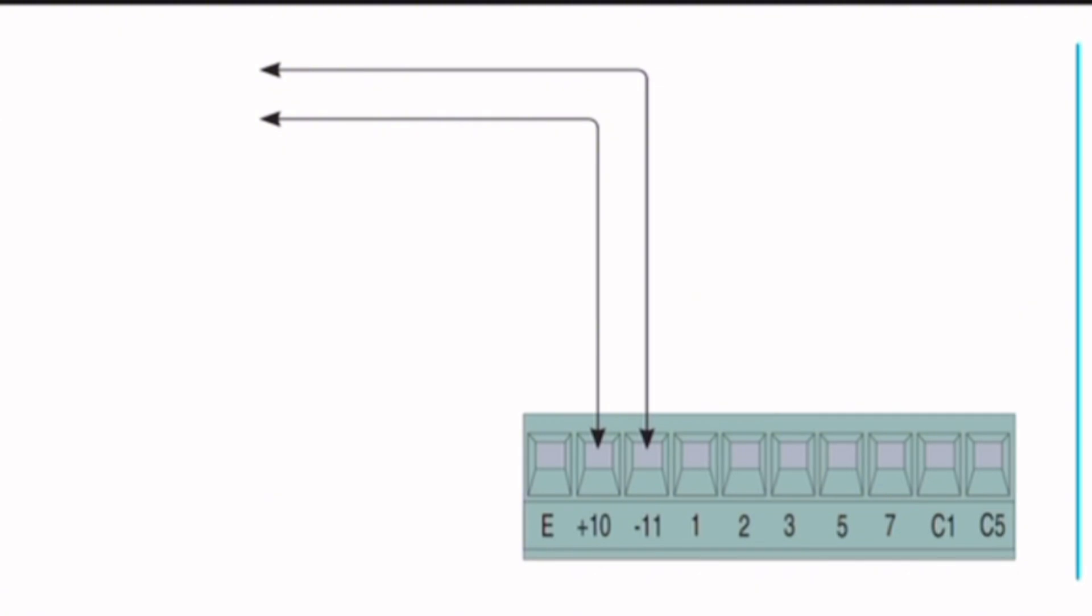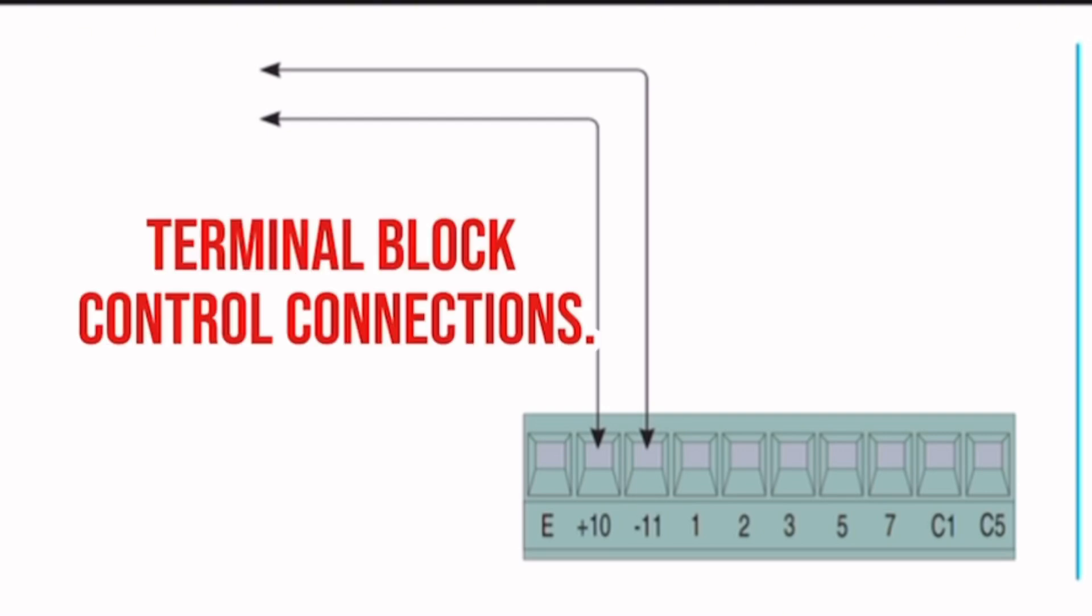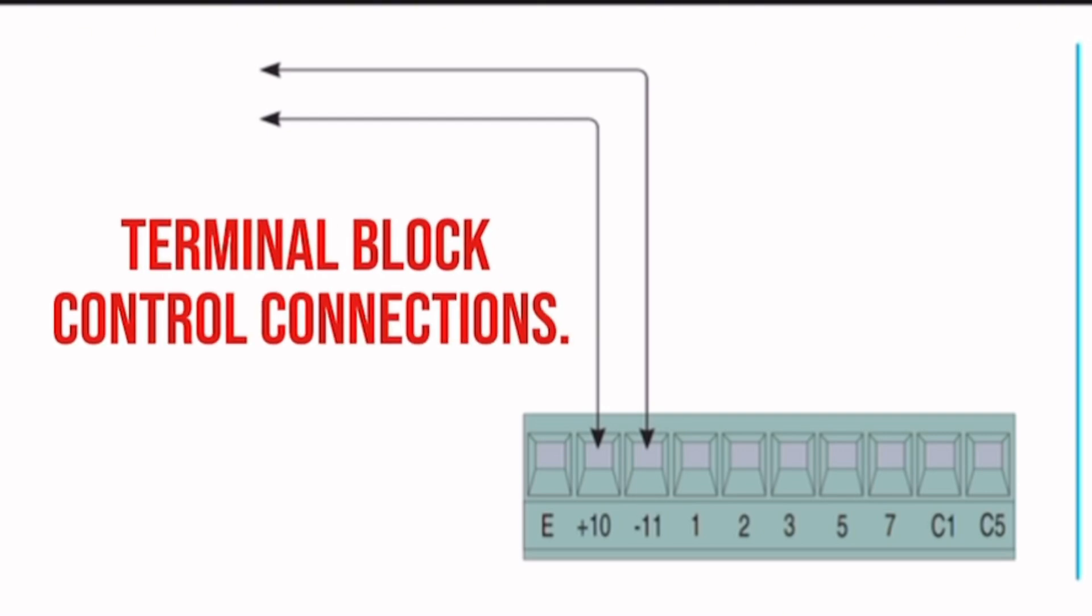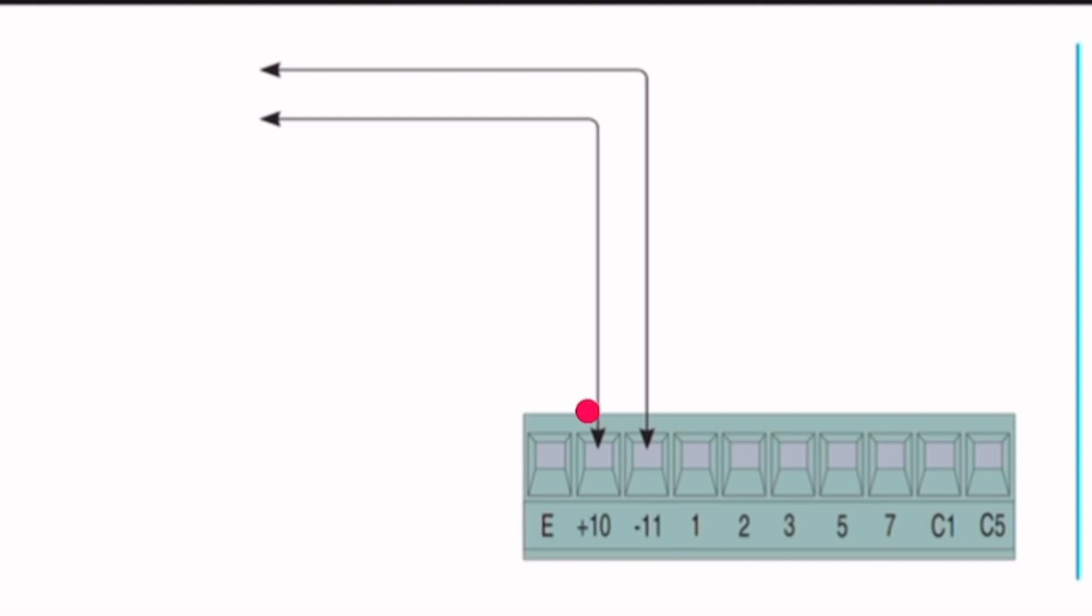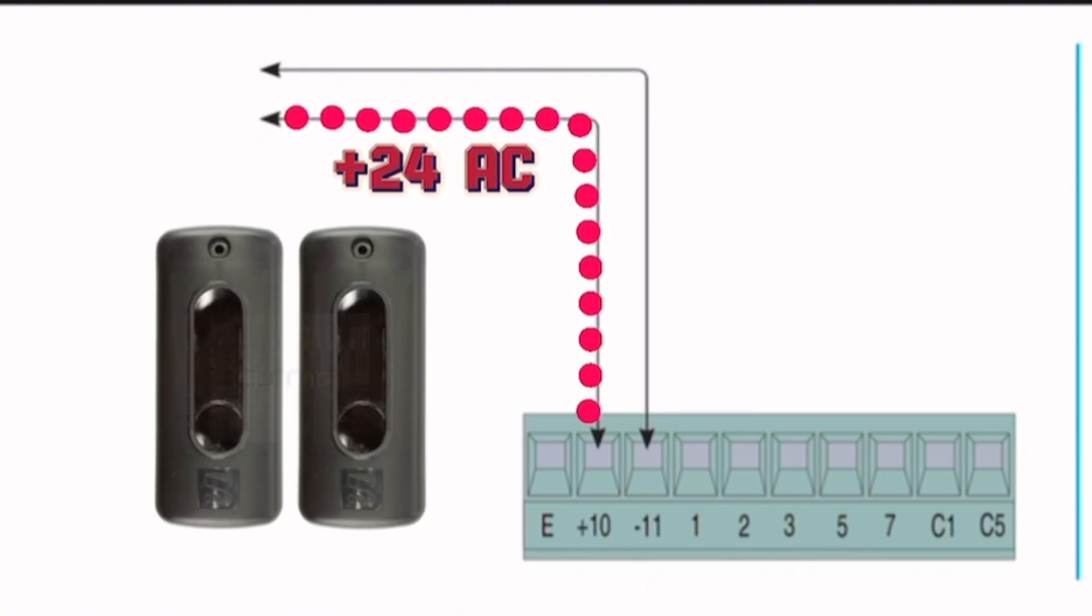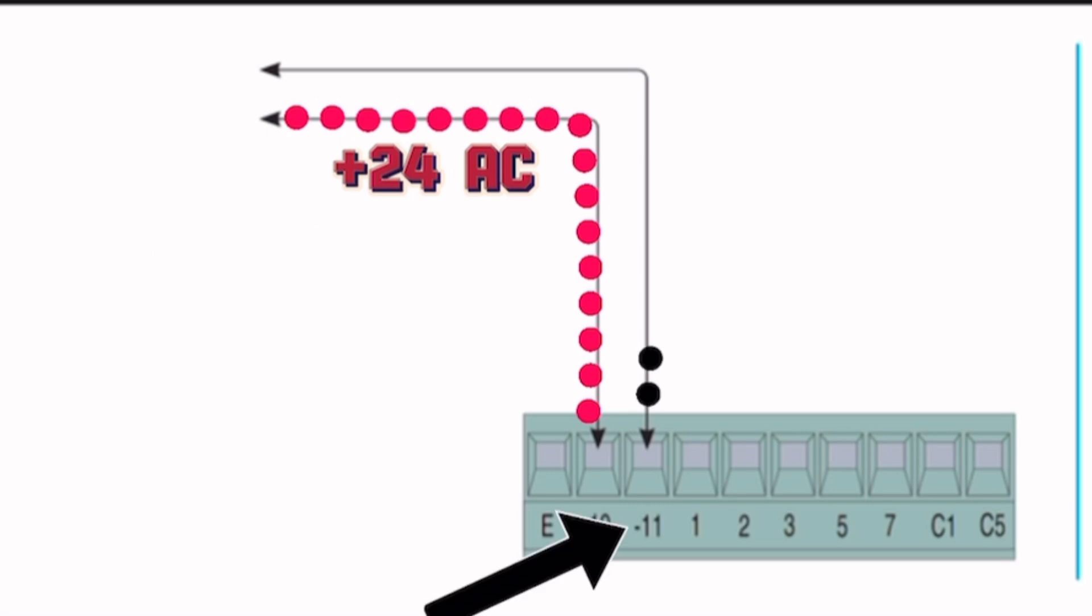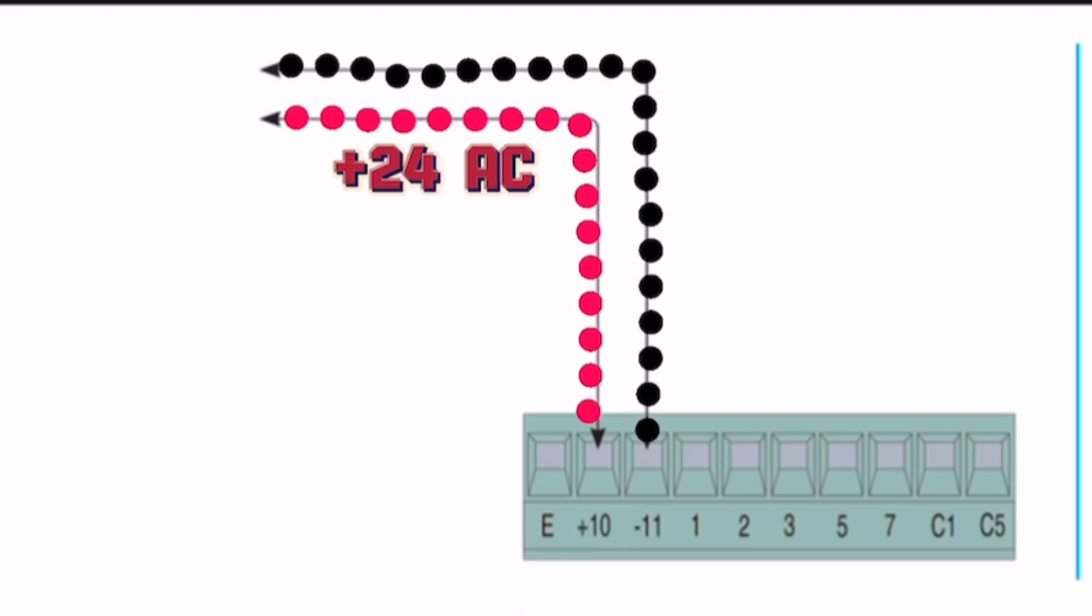This diagram shows a wiring layout for a control board with terminal block. These blocks handle connections for output power supply for powering accessories. Terminal +10 supplies 24V AC reference voltage, often used for sensors or control devices requiring low voltage. Terminal 11 is negative terminal or ground for devices connected to the +24V supply.